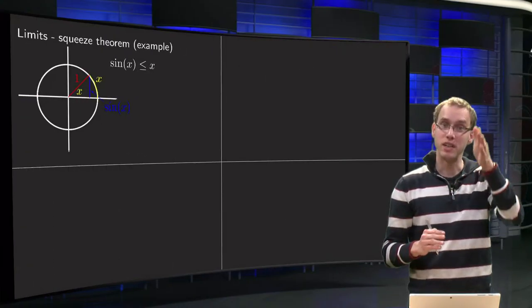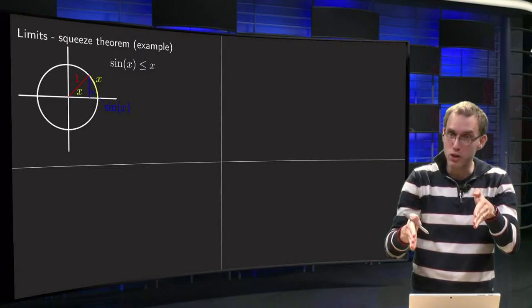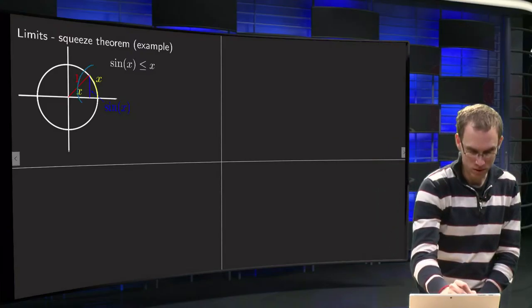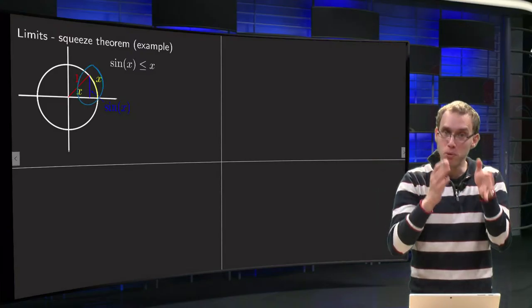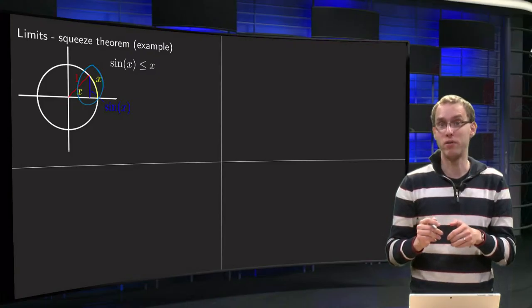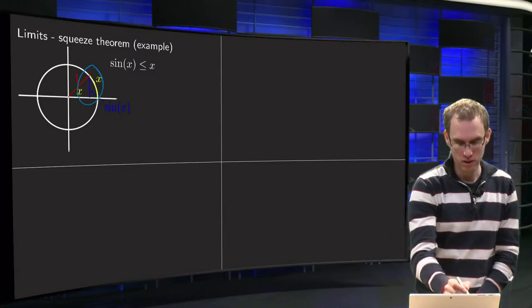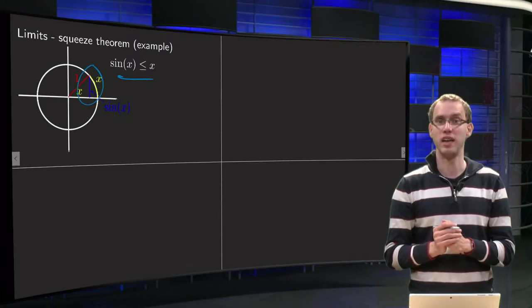And then we see that this blue line is smaller than the circular arc that you can see from the picture. So this blue sin x is smaller or equal than the circular arc x. So this is our first inequality.